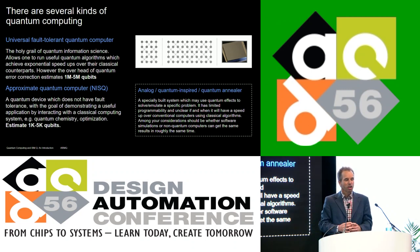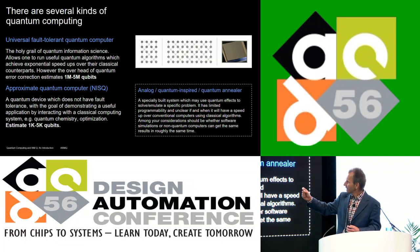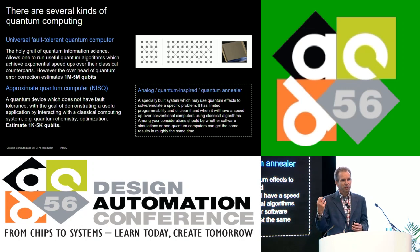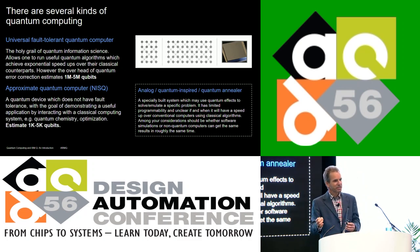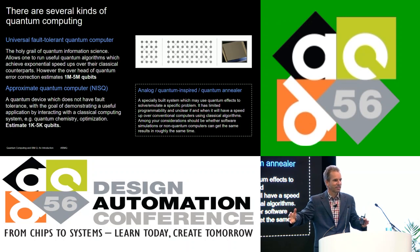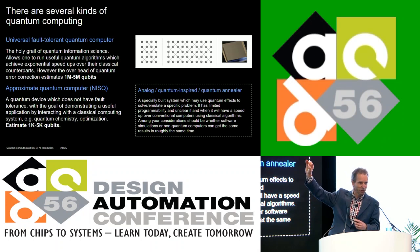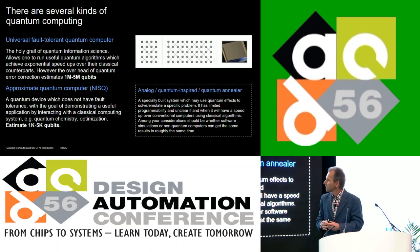A couple of years ago, people got the notion of approximate or noisy intermediate-scale quantum (NISQ) computers — where you can do extremely interesting quantum computations with qubits that are not necessarily perfect. There is a significant class of algorithms that can execute on imperfect quantum computers as long as they're good enough to sustain the length of the computation. This has created a big boost of energy in the last five or six years, because we don't have to wait for the universal quantum computer.